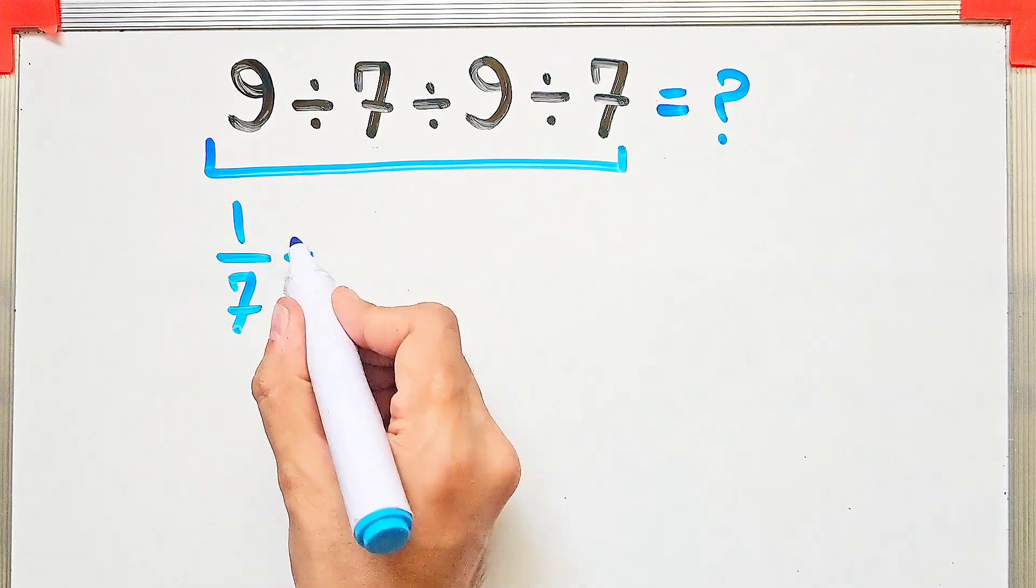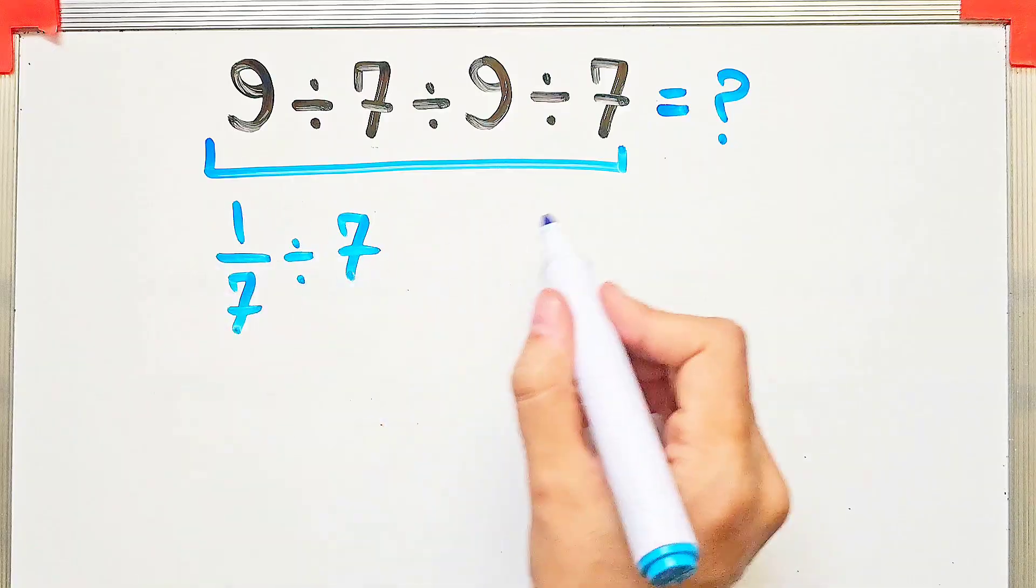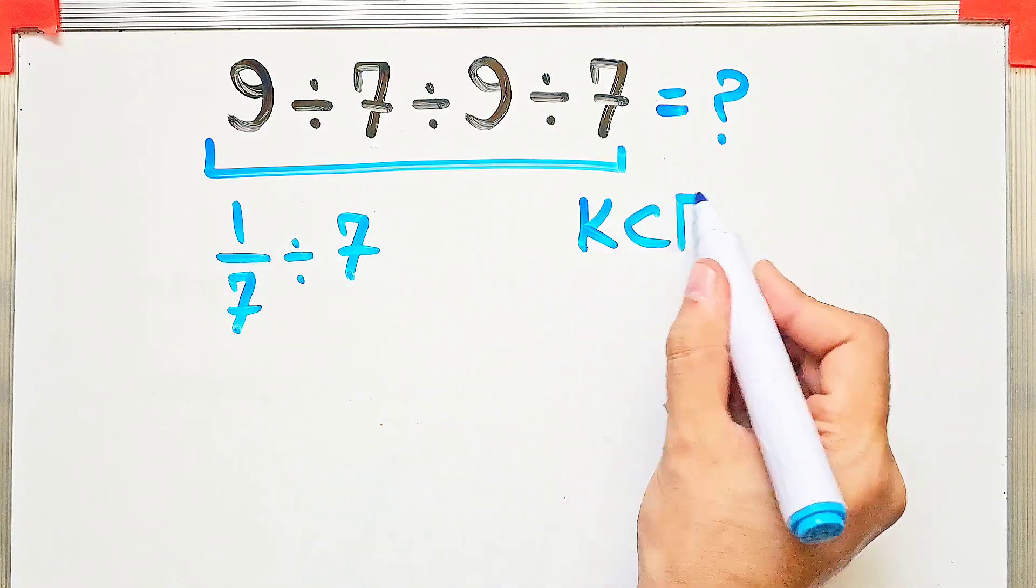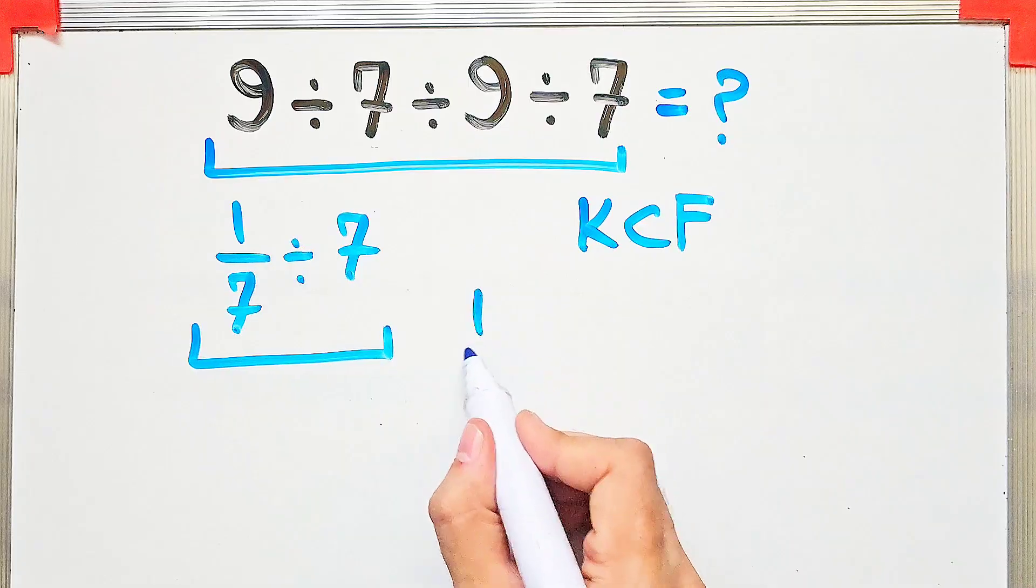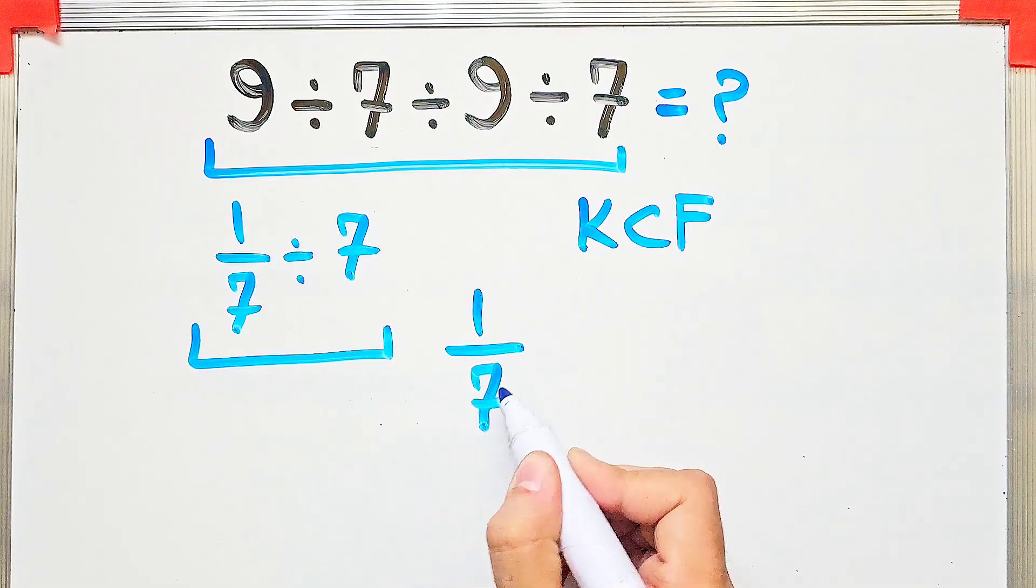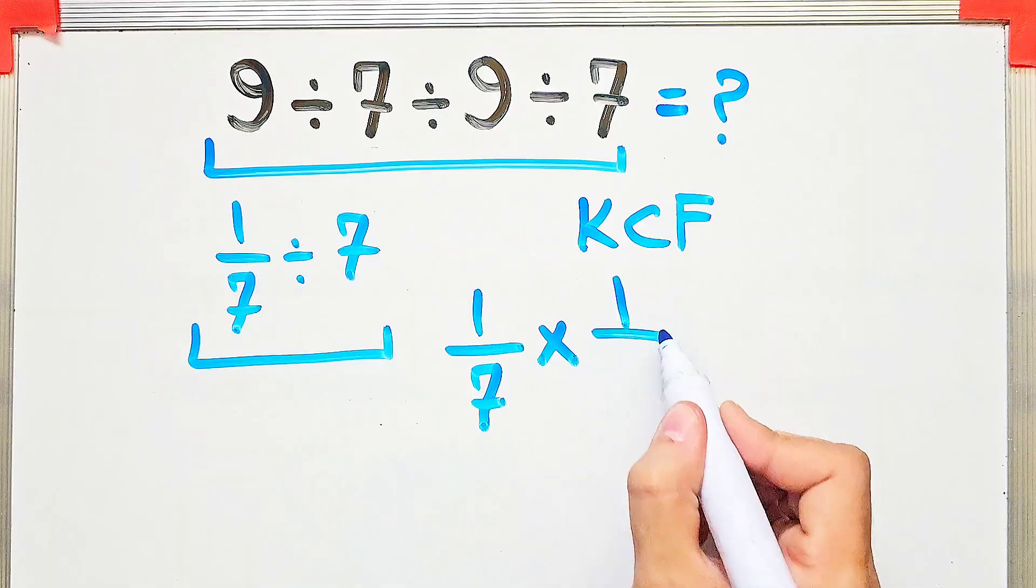Again, to solve this part, we need to follow the KCF rule. We keep the first fraction as it is. After that, we change the division sign to the multiplication sign, and after that, we flip the second number. Now we have 1 over 7 times 1 over 7.